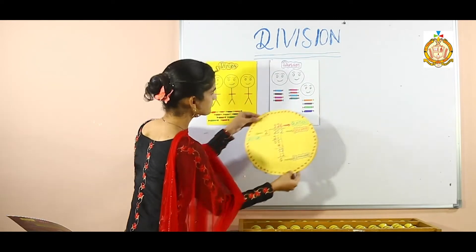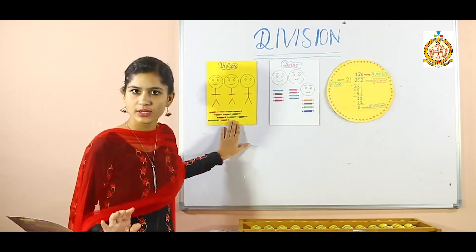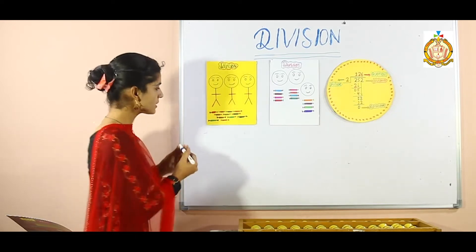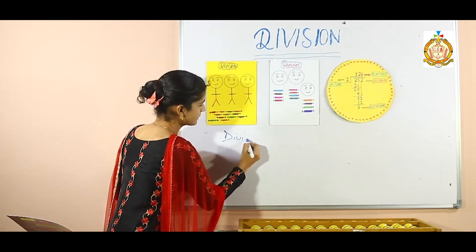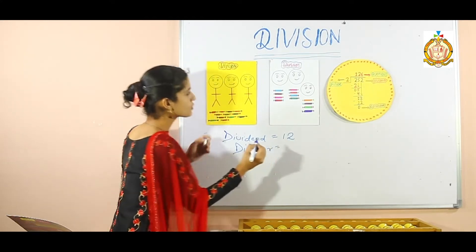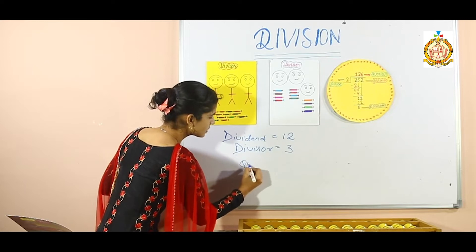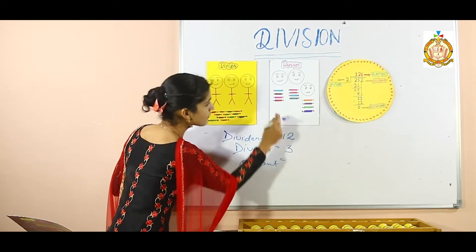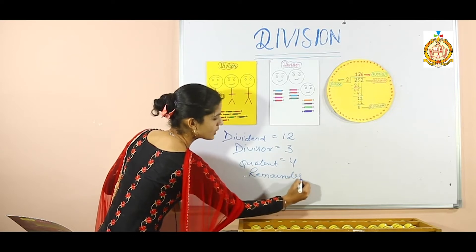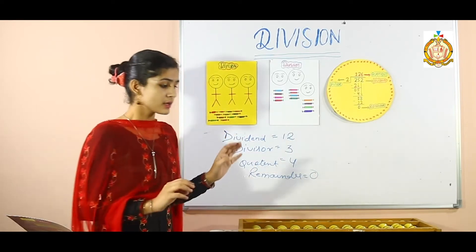Here, 12 candies were there. What we wanted to distribute was 12 candies, so our dividend was 12. Divisor — how many parts did we want to divide? 3, because 3 babies are here, so divisor is 3. Whatever the answer is, it is 4. We gave 4 candies to each, so that is our quotient. And the remainder — was any candy left? No. We equally divided, so 0 was the remainder in this example.